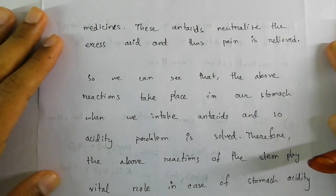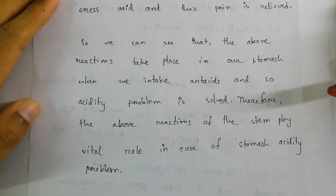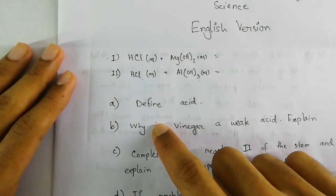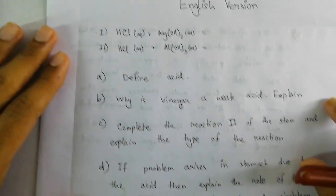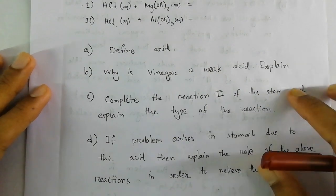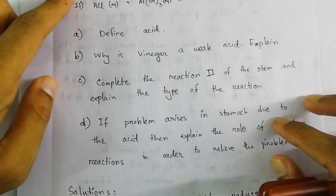The resulting salt and water are not corrosive to the stomach and are expelled from the body as waste. Therefore, antacids neutralize the excess acid and the pain is relieved. In conclusion, the above reactions take place in our stomach when we intake antacids, solving the acidity problem. Thus the reactions of the stem play a vital role in stomach acidity problems.